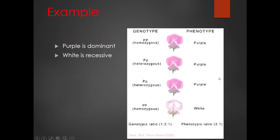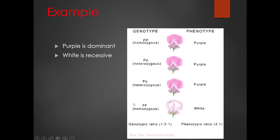A classic example: purple is the dominant color in flowers, white is recessive. If you have two dominant purple alleles, you get a purple flower. If you have one dominant and one recessive, you still get the purple flower because purple is dominant. You only get a white flower when you're homozygous recessive — meaning you receive a recessive allele from both your mom and your dad.